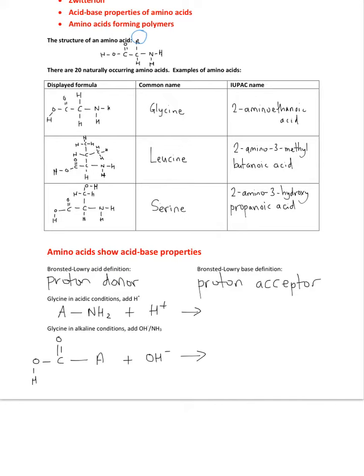Leucine is next, a bit more complex. But again, you find the longest chain, so it's four carbons long. And then we can see the amino group in the two position, and there's a methyl group in the three position. So it comes to 2-amino-3-methylbutanoic acid.